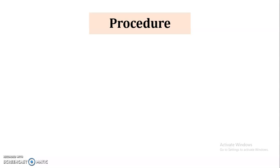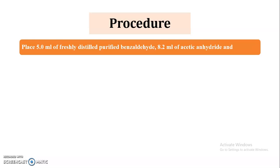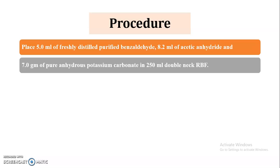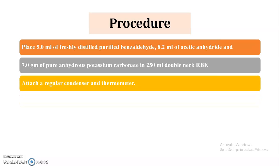Now we will see the procedure for the synthesis of cinnamic acid. You can write this procedure in your notebook. First step: place 5 ml of freshly distilled purified benzaldehyde, 8.2 ml of acetic anhydride, and 7 g of pure anhydrous potassium carbonate in a 250 ml double-neck round bottom flask. We have to take three chemicals: benzaldehyde, acetic anhydride, and anhydrous potassium carbonate. As mentioned, we can use either potassium acetate or potassium carbonate — here we are going to use potassium carbonate.